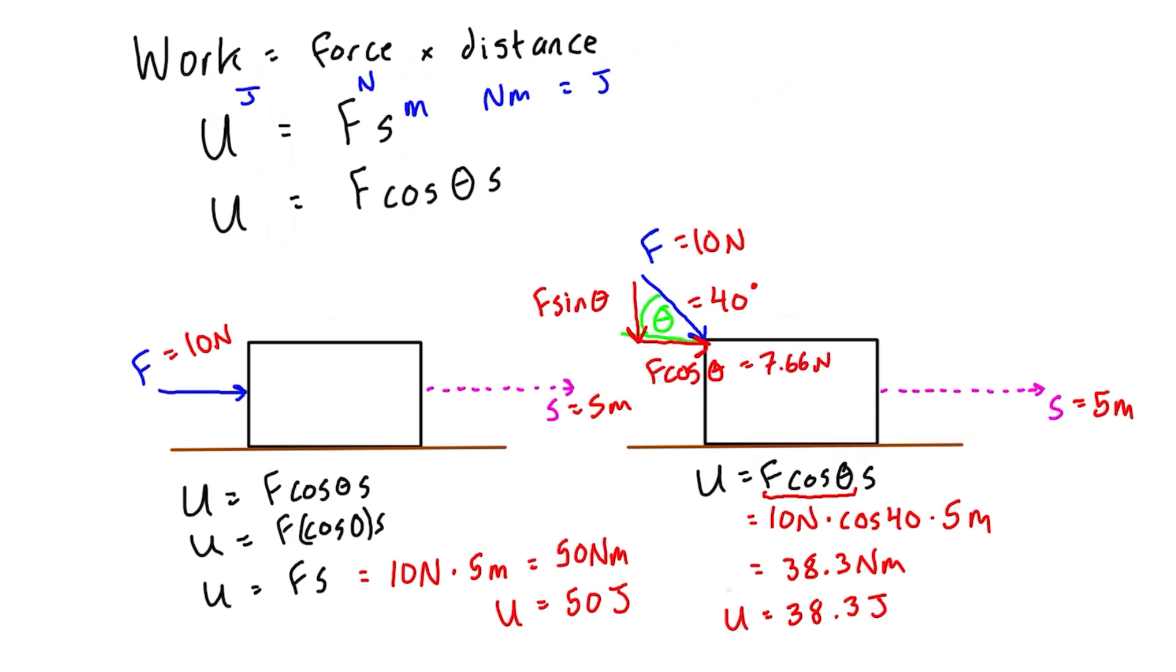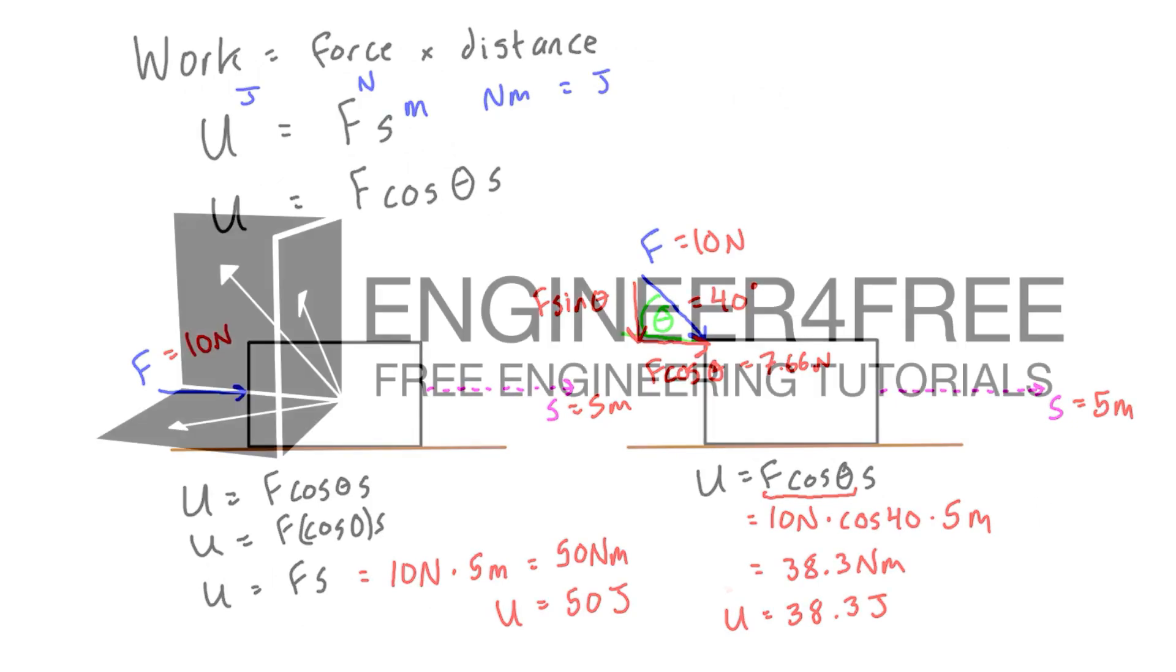So 10 times the cos of 40 equals 7.66 newtons. If you multiply 7.66 times 5 meters, you get exactly the same thing, because that's what we did earlier. If you prefer to think about it by finding the component first and then multiplying by the distance, that's a fine way to do it as well.